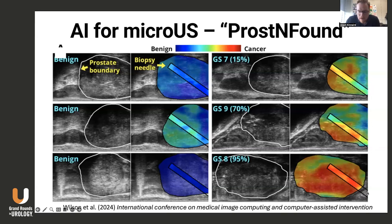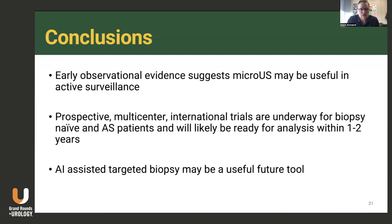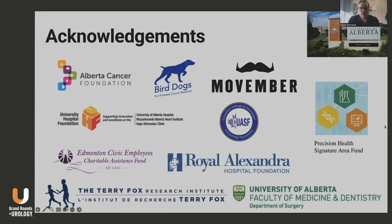This is really exciting stuff and I think it will have significant impact on both biopsy-naive and active surveillance patients. In conclusion, early observational evidence suggests micro-ultrasound may be useful in active surveillance. Prospective multicenter international trials are underway for biopsy-naive and active surveillance patients and will likely be ready for analysis within the next one to two years. AI-assisted targeted biopsy may be a useful future tool. Thank you very much and have a good rest of the conference.